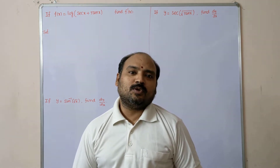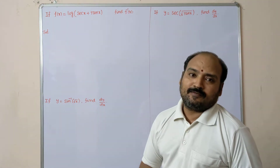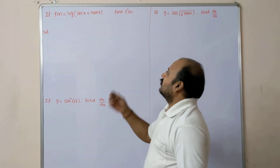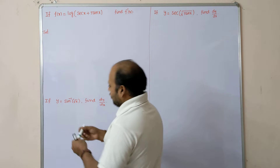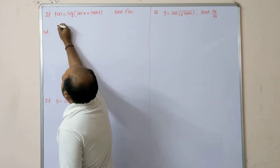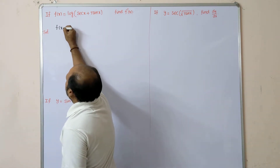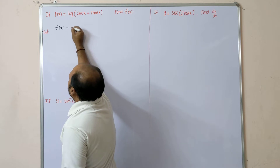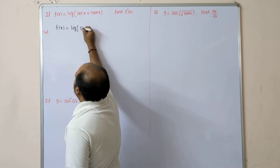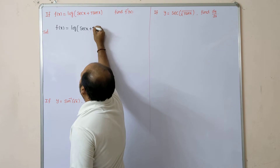Then it will be easy to do the sums related to the questions. Now the first question: f(x) = log(sec x + tan x).